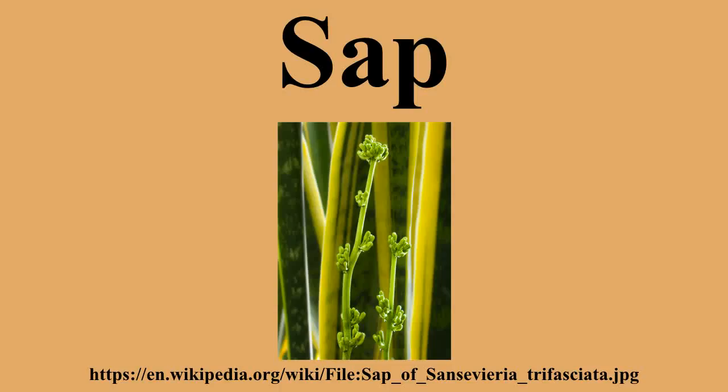Sap is a fluid transported in xylem cells or phloem sieve tube elements of a plant. These cells transport water and nutrients throughout the plant. Sap is not to be confused with latex, resin, or cell sap. It is a separate substance, separately produced, and with different components and functions.